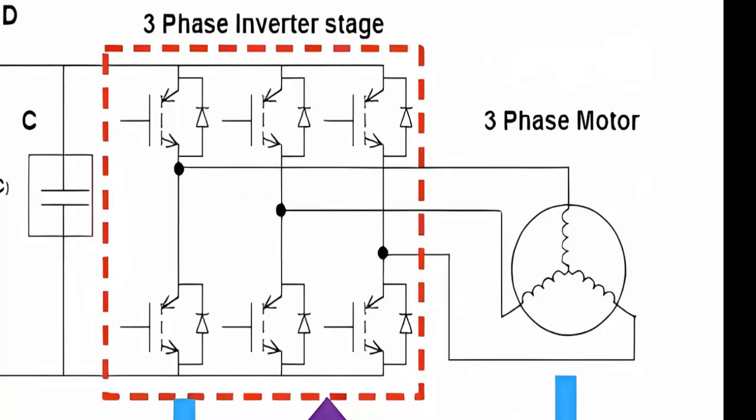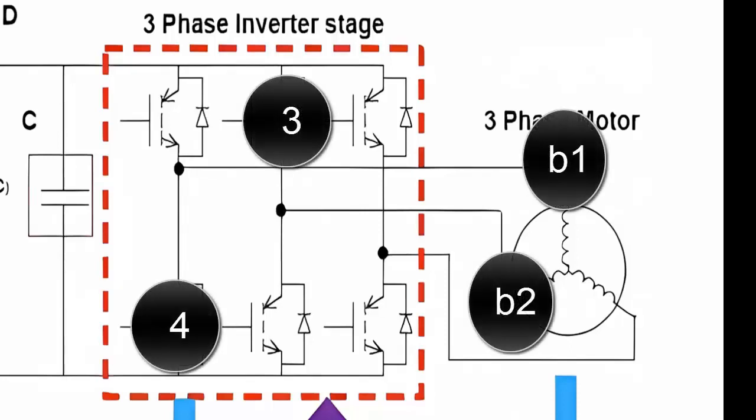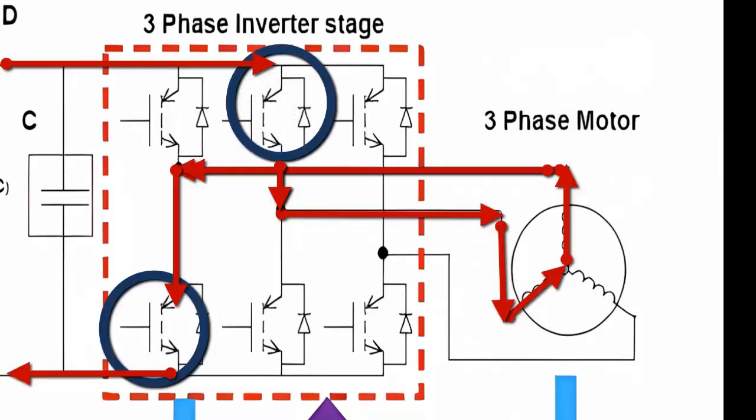Let's continue with the strategies to achieve the second sense of the current through the three coils of the compressor motor. Strategy 4: Activating transistor 3 to allow the current flow to coil 2, it is essential to simultaneously activate transistor 4, allowing the current to exit through coil 1.